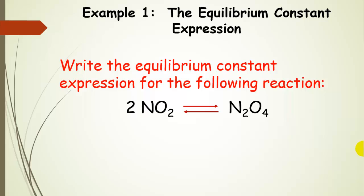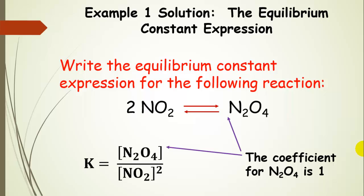Pause the presentation and try to write the equilibrium constant expression for this reaction. The equilibrium constant K equals products over reactants, each raised to the coefficient power. The coefficient of dinitrogen tetroxide is one, so it's dinitrogen tetroxide to the first power divided by nitrogen dioxide to the second power. That's the equilibrium constant expression for the reaction we've been discussing.